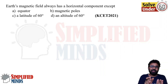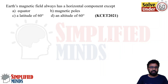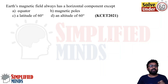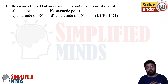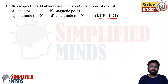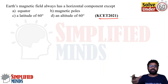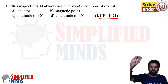In this chapter, I will be able to solve all the answers. Coming directly to the first question: the Earth's magnetic field always has a horizontal component, except — and this is a very nice question. Usually, there is something called dip and declination, and we consider the equator or the poles.